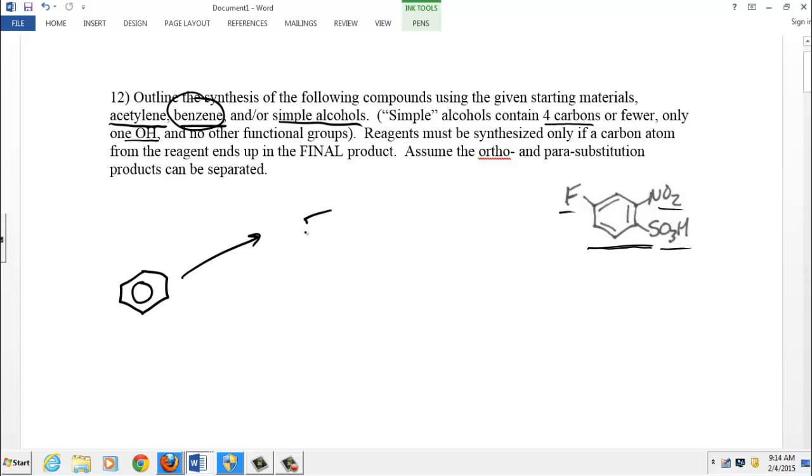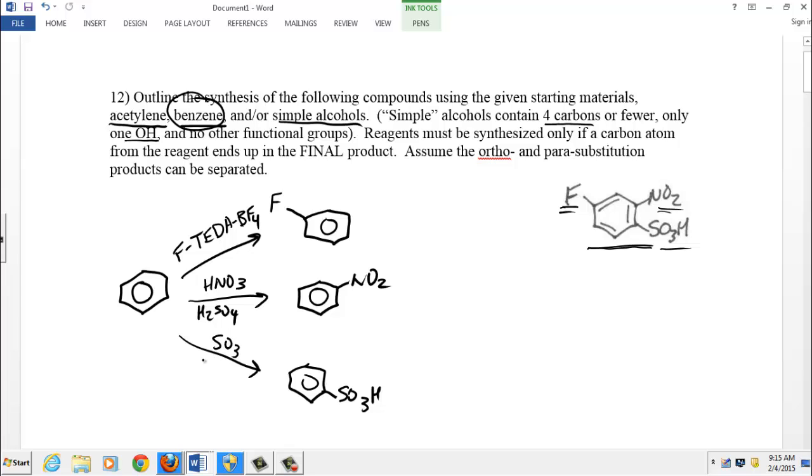If we want to put the fluorine on, let's take note of where it is, it's on the left hand side. We want to put that onto the ring beginning with benzene. That one weird reagent, that triethylenediamine with the BF4 reagent. Also need to recall the reaction that puts a nitro group on the ring. That would be nitric acid and sulfuric acid. And finally, we need to recall the reagents that put on the sulfonic acid group. That would be SO3 and sulfuric acid.